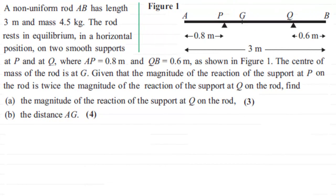We have a typical problem on the equilibrium of a rigid body. Have a go, pause the video, come back when ready. The question involves a non-uniform rod AB which has a length of three meters and a mass of 4.5 kilograms. The rod rests in equilibrium in a horizontal position on two supports, one at P and one at Q, where AP is 0.8 meters and QB is 0.6 meters, as shown in the diagram.